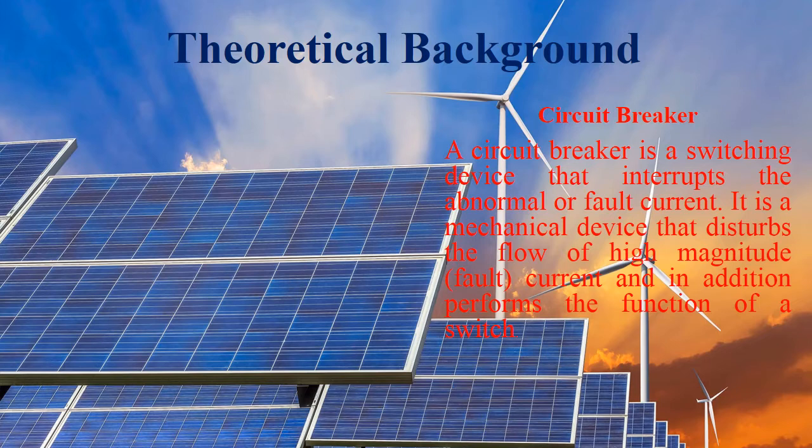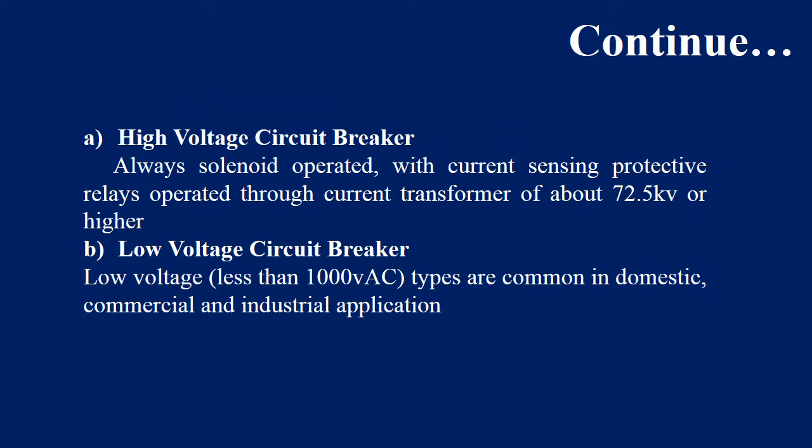If I talk about the classification of circuit breakers, there are two types: high voltage circuit breakers and low voltage circuit breakers. A high voltage circuit breaker is solenoid operated with current sensing protective relays, operated through a current transformer of about 72.5 kV or higher. These are normally used on the industrial side. Low voltage circuit breakers normally operate at less than 1000 volts and are common in domestic, commercial, and industrial applications.